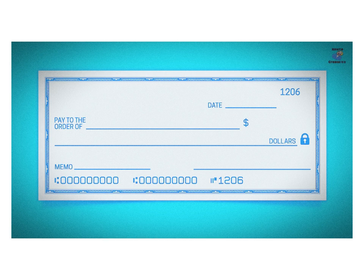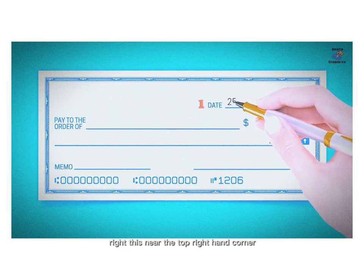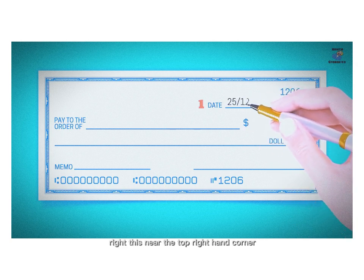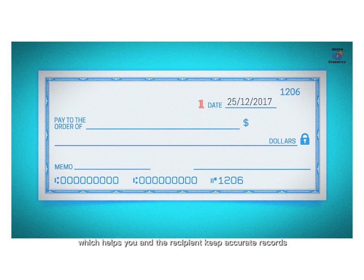Number 1: Current Date. Write this near the top right-hand corner. In most cases, you will use today's date, which helps you and the recipient keep accurate records.